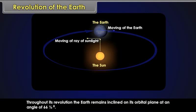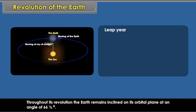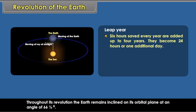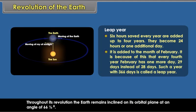Leap year. Six hours saved every year are added up to four years. They become 24 hours or one additional day. It is added to the month of February. It is because of this that every fourth year, February has one more day—29 days instead of 28 days. Such a year with 366 days is called a leap year.